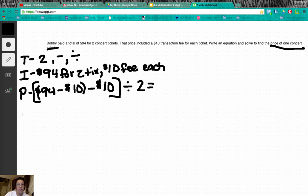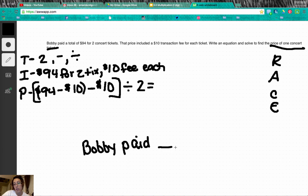And then a solution is to use race. So race, I'm going to start with restate. Bobby paid - we need to know how much money for each ticket. So we've got to do some math here before we can finish that up. A is answer all parts. We've done that with our problem here. We've set ourselves up for success.